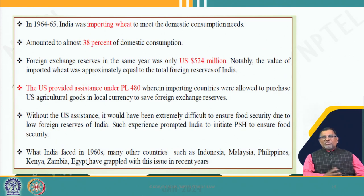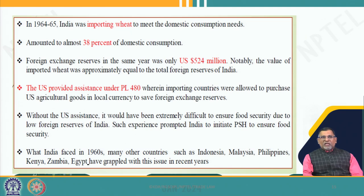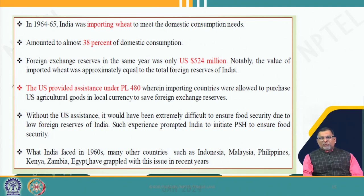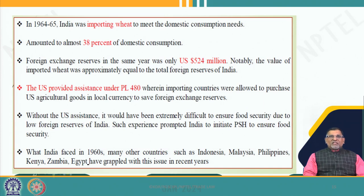Coming back to India — there was the famous Bengal famine in 1943, and when you look into the post-independence era, the situation was not much improved in 1964–65. India was importing wheat for domestic consumption and was not a producing country even at that point of time — importing 38 percent of domestic consumption. We had to import even grains at that point of time. Our economic situation in 1965 was very poor.